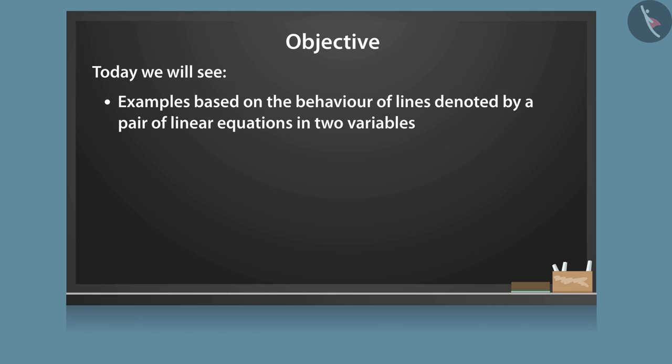In the last video, we studied the behavior of lines denoted by a pair of linear equations in two variables. Now, we will look at some of the commonly made mistakes based on this.